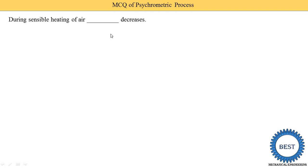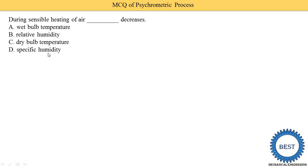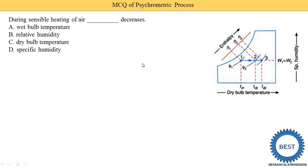During sensible heating of air, which parameter increases? During sensible heating, the dry bulb temperature is increased and specific humidity remains constant. To solve psychrometric process MCQs, you at least need to draw a psychrometric chart. Here we see the inlet air, the heating coil, and the outlet. Dry bulb temperature increases, wet bulb temperature also increases, and specific humidity remains constant. The relative humidity is higher at inlet and lower at outlet. So option B — relative humidity decreases during sensible heating — wait, actually relative humidity decreases.